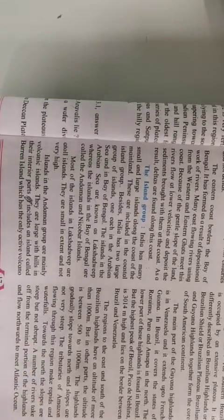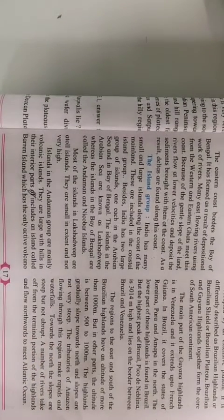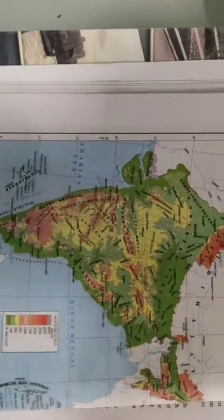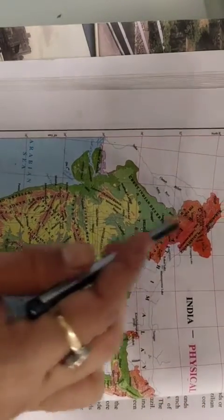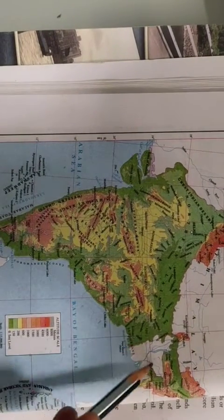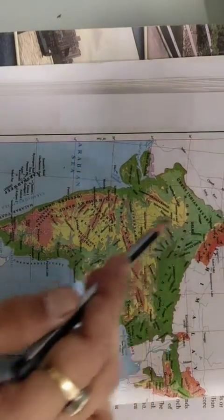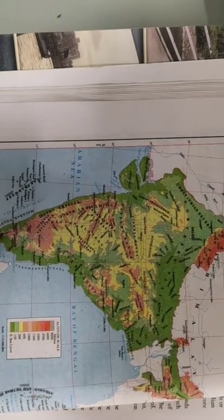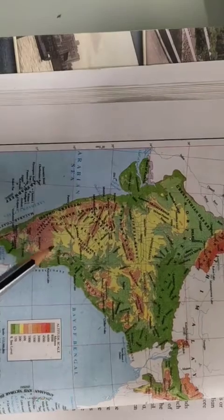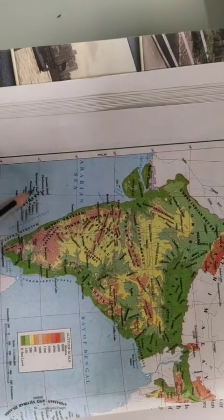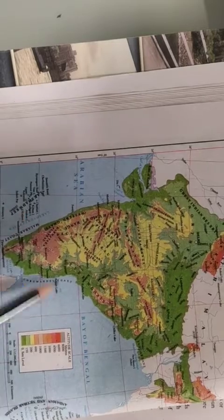India has many small and large islands along the coast of the mainland. So which is the mainland? People often get confused. So this is our country. The whole thing that you see, from east to west and north to south is the mainland. India extends on either of its sides, that is on both the sides.